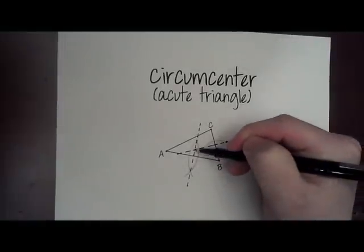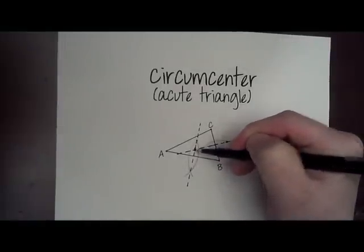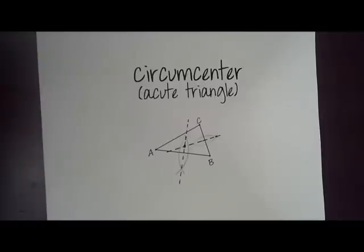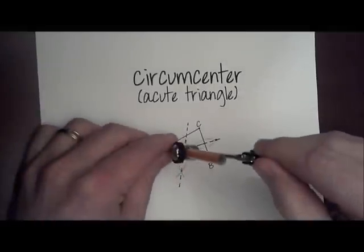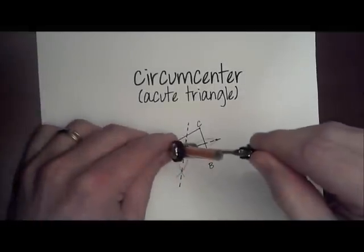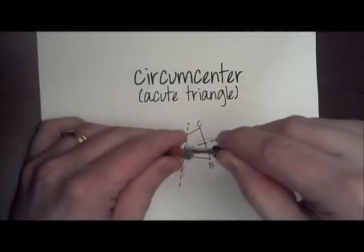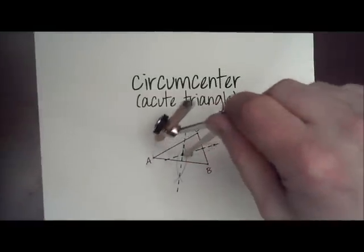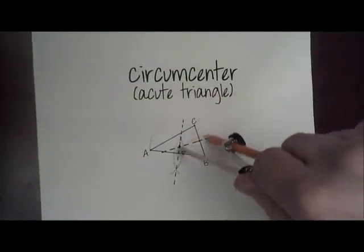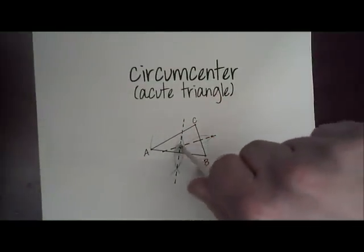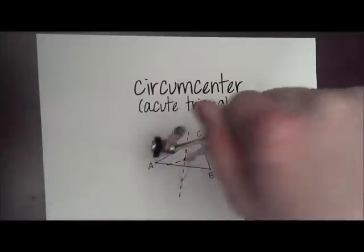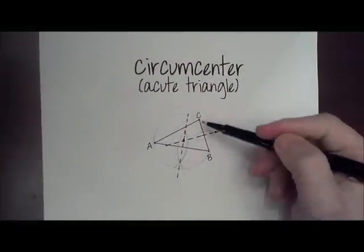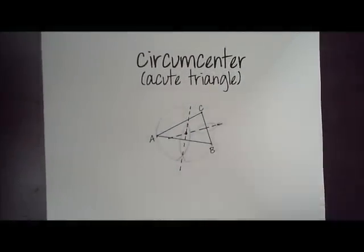And where they intersect is the circumcenter of the circle. Now, very quickly — you don't have to do this, but I will to show you, to review. I'm not going to do this in the other two — I'm saying that now, but I'm probably lying. Again, if you draw a circle where that circumcenter is the center, it perfectly hits each of the three vertices of the triangle.